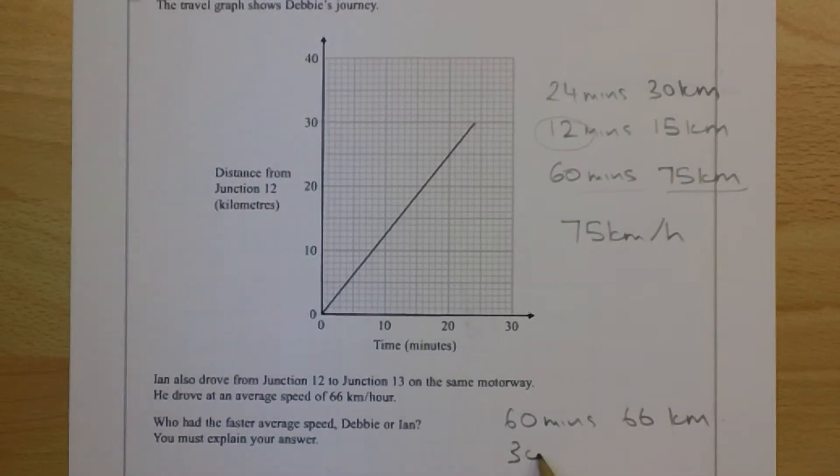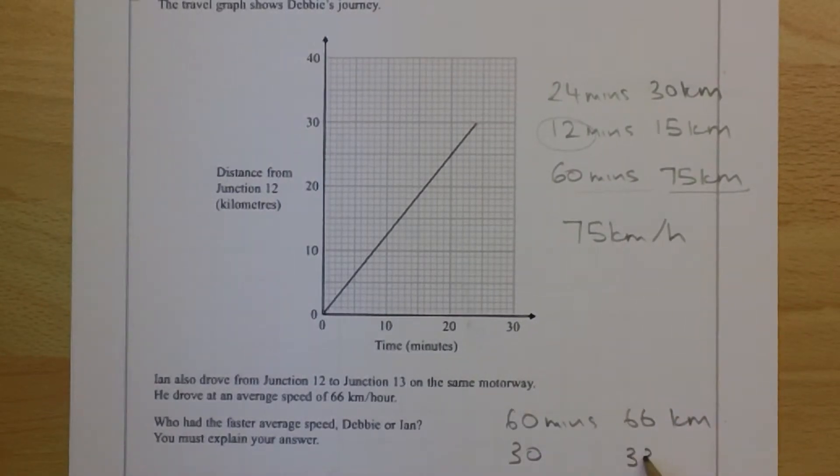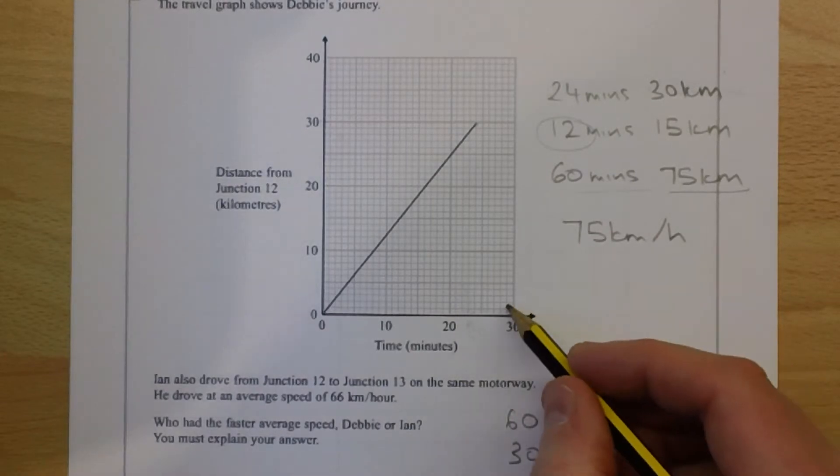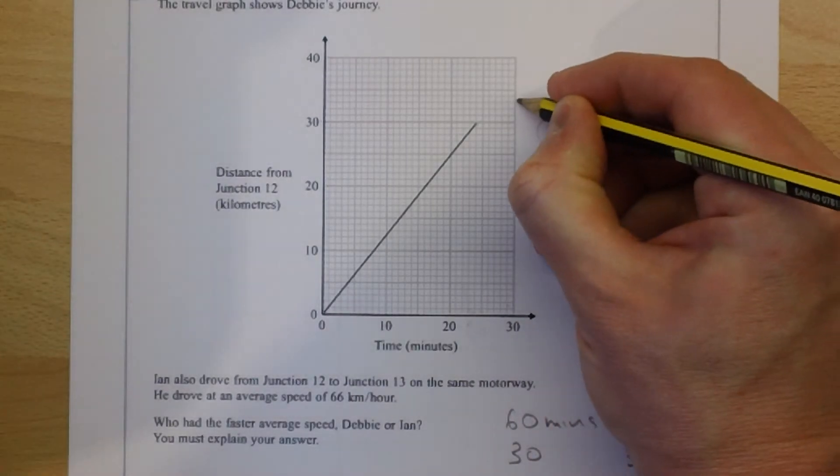But if we half the amount of time, we can half the distance he's travelled. So in 30 minutes, he will have travelled 33 kilometres.